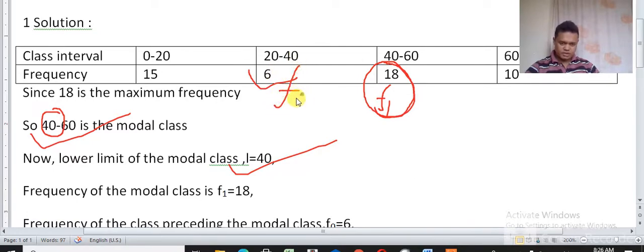We also need the frequency just after the modal class, succeeding the modal class. That one is 10, so we write this one f2. We write this in the order 0, 1, and 2.